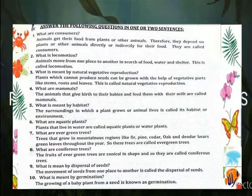What is meant by natural vegetative reproduction? Plants which cannot produce seeds can be grown with the help of vegetable parts like stems, roots and leaves. This is called natural vegetative reproduction.